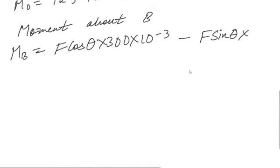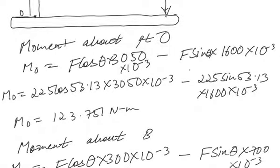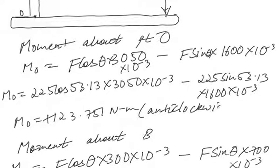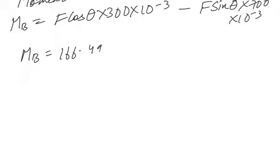The Fsinθ perpendicular distance to point B is 700 × 10⁻³ m. Substituting all values, M_B comes out to be 166.499 Nm. Since it is positive, the moment about B is also anticlockwise.